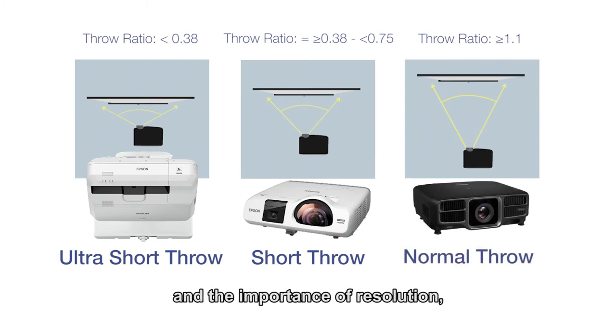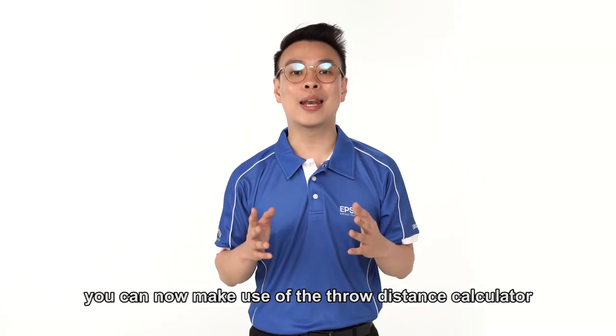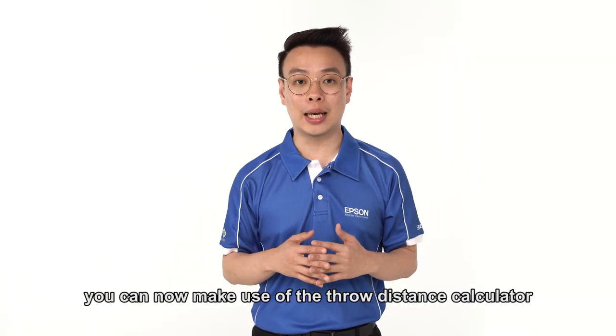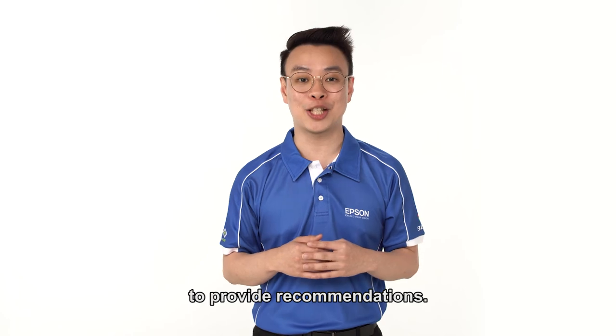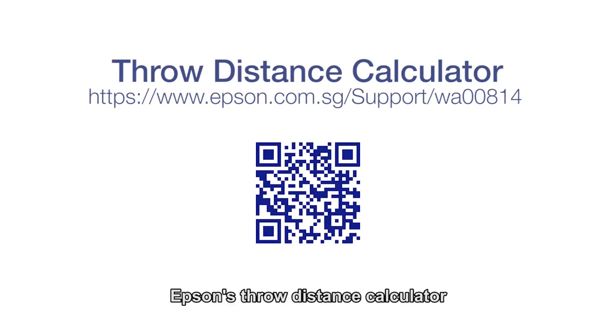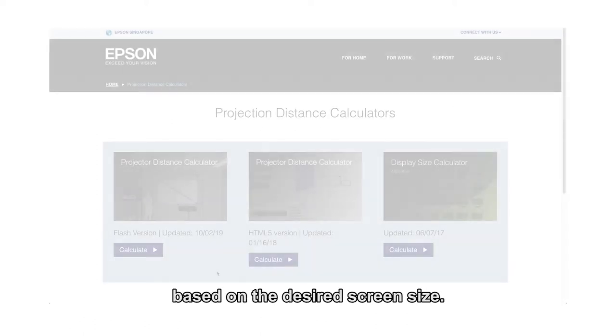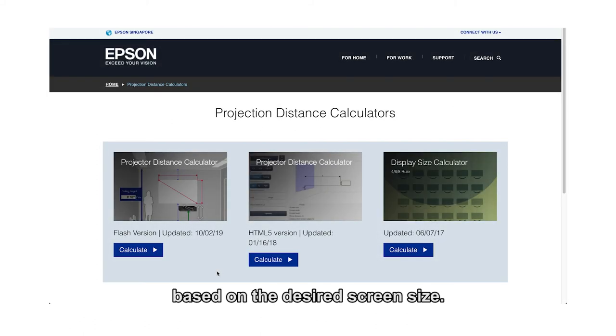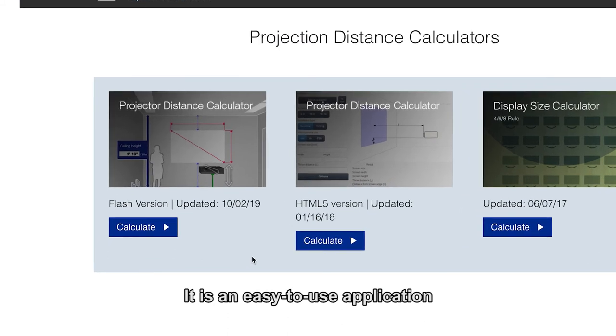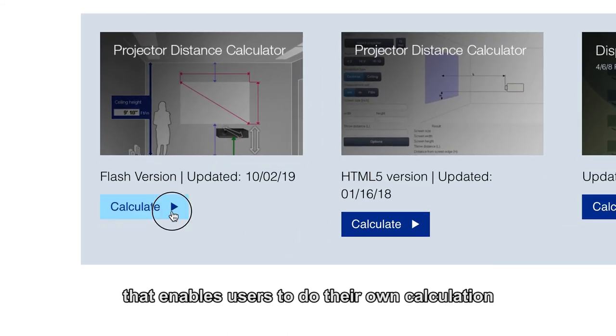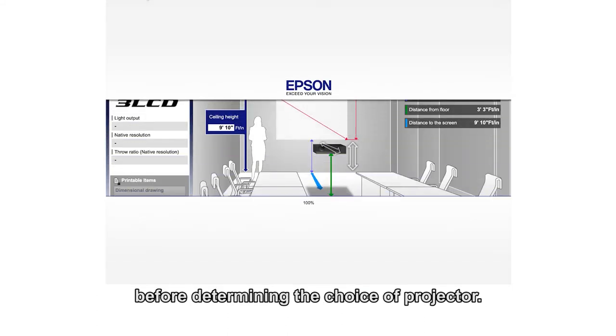After knowing your throw ratio and the importance of resolution, you can now make use of the throw distance calculator to provide recommendations. Epson throw distance calculator generally allows users to calculate their mounting position based on the desired screen size. It is an easy to use application that enables users to do their own calculation before determining the choice of projector.